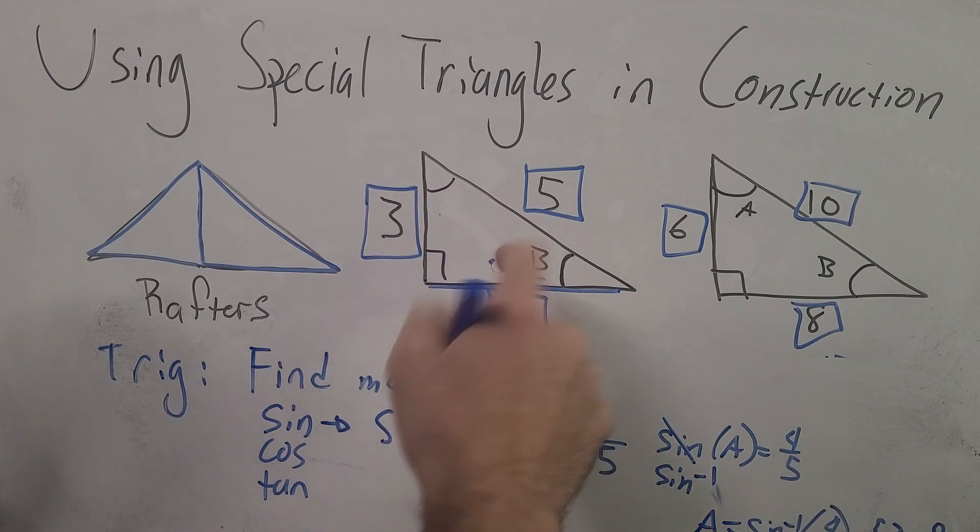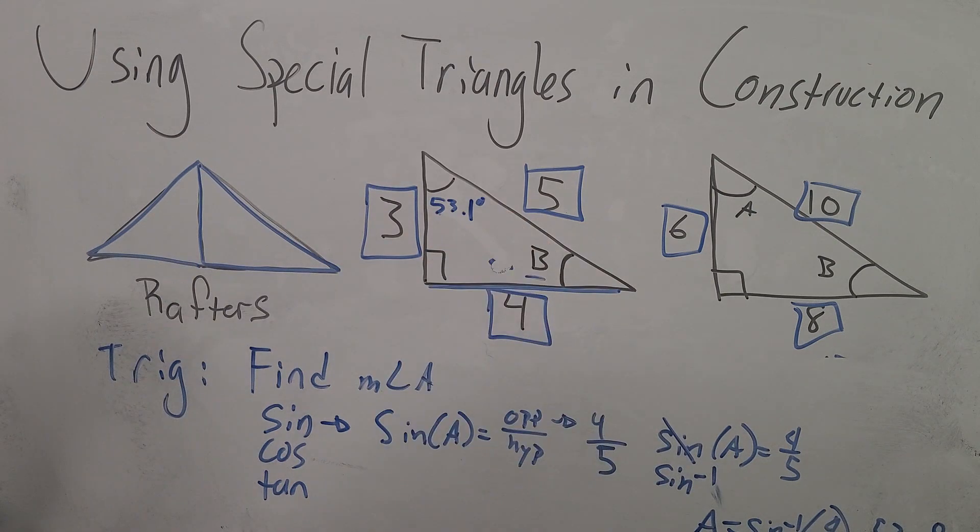Now this simplifies to approximately 53.1 degrees. Instead of A I could write 53.1. Now on a larger scale project you're going to want to involve as many decimals as possible for your degrees. But typically the tenth or the nearest hundredth is acceptable.